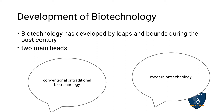Biotechnology has developed by leaps and bounds during the past century. Biotechnology is the technology used in living organisms to improve techniques, to improve human life, or to improve the variety of plants and animals. There are two main heads in the development of biotechnology: conventional or traditional biotechnology, and modern biotechnology.